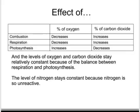As you can see here, combustion and respiration both decrease the percentage of oxygen in the air — they use up oxygen and increase the percentage of carbon dioxide. Whereas photosynthesis does the reverse: it increases the percentage of oxygen and decreases the percentage of carbon dioxide. The levels of oxygen and carbon dioxide stay relatively constant because of this balance between respiration and photosynthesis.